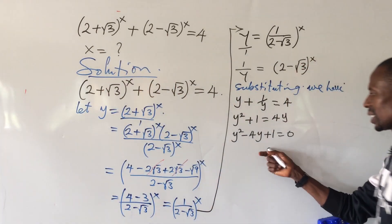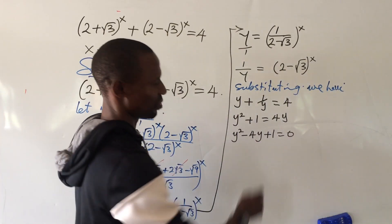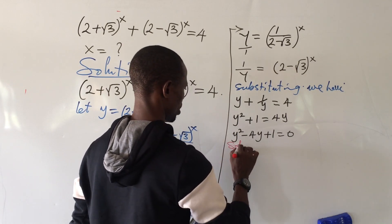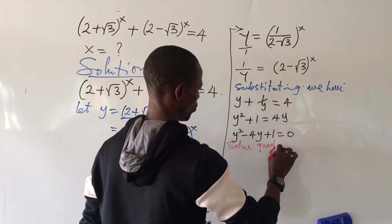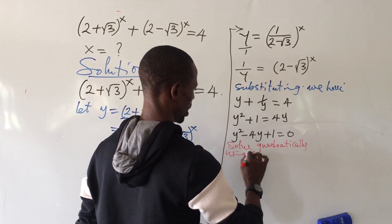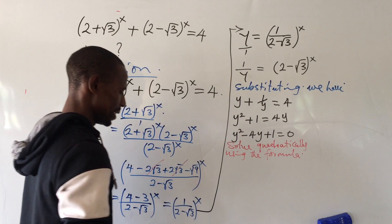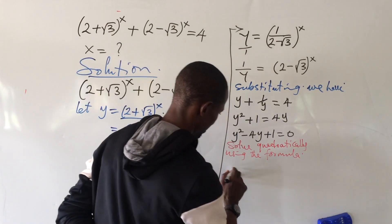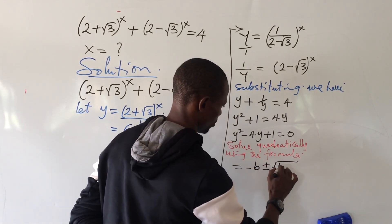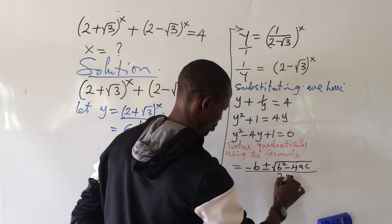Without being told, this is a quadratic equation. Let's solve using the quadratic formula, because we cannot use the factorization method here. Our formula says: minus b, plus or minus the square root of b squared minus 4ac, all over 2a.